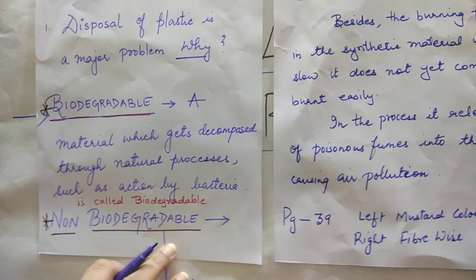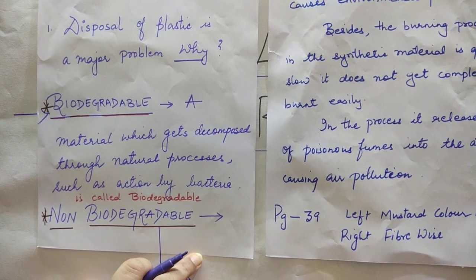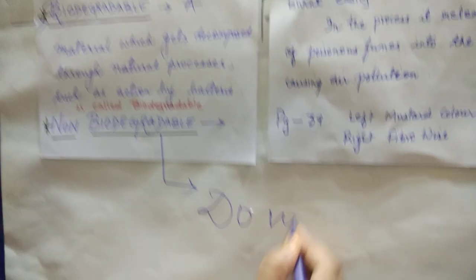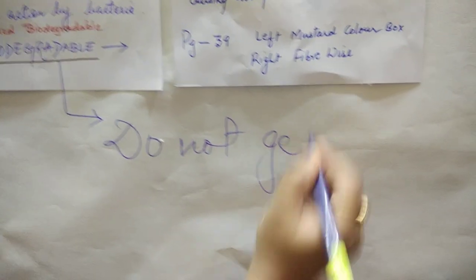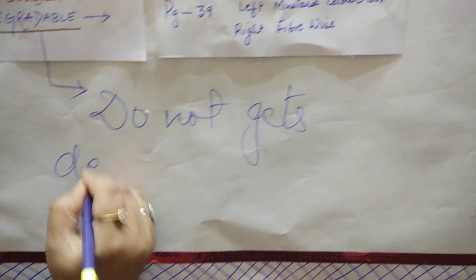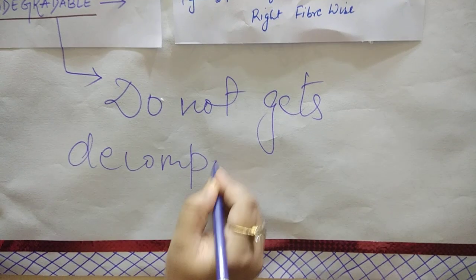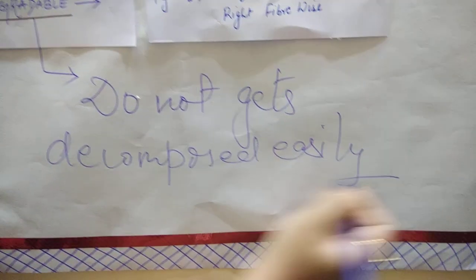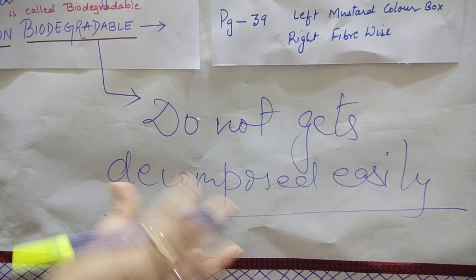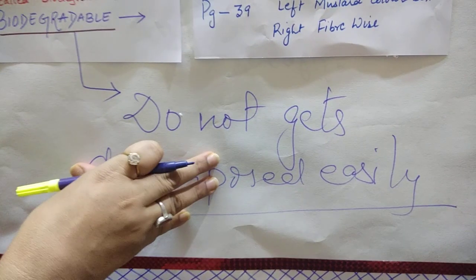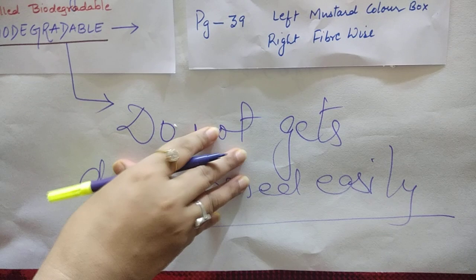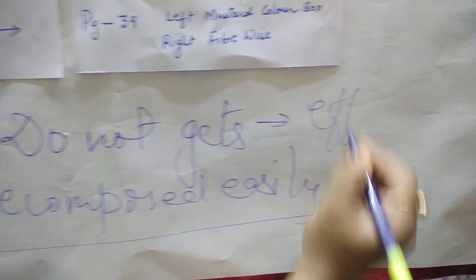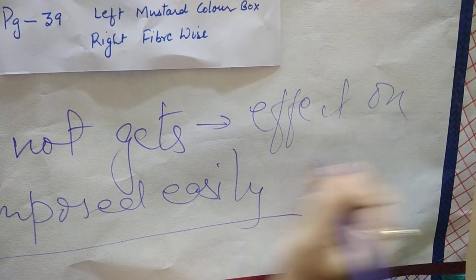The next category is non-biodegradable waste, and plastic comes under this category. Non-biodegradable waste is waste or material which does not get decomposed easily. This leads to the major question: if it is not easily decomposed, what is the effect on the environment?